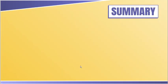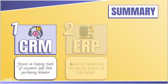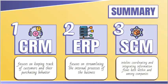As a summary, the primary goal of CRM is to enhance the relationship with customers. For ERP, it is to improve and streamline internal business processes. SCM, on the other hand, aims to facilitate the collaboration between the organization, its suppliers, the manufacturers, the distributors, and the partners.